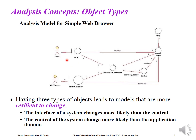This diagram shows the analysis model for a simple web browser in which entity, boundary, and control objects are depicted. The GUI and HTTP gateway represent the boundary objects, the download controller is the control object, and entity objects use their respective notation. Having three types of objects leads to models that are more resistant to change — if any change happens in the interface, the control and entity objects remain unaffected.